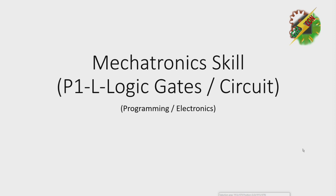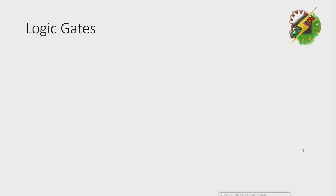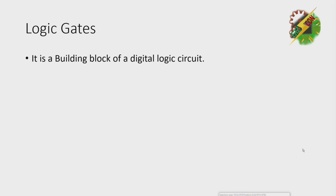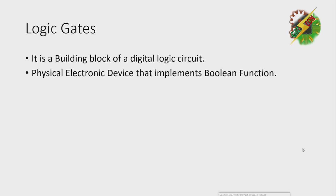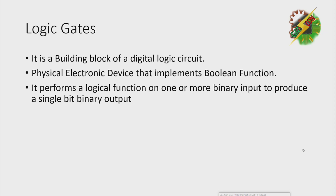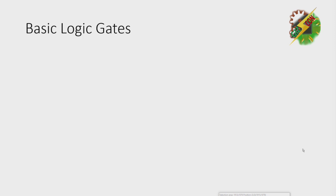First, we need to define what a logic gate is. A logic gate is a building block of a digital logic circuit — a physical electronic device that implements a boolean function. It performs a logic function on one or more binary inputs to produce a single-bit binary output.